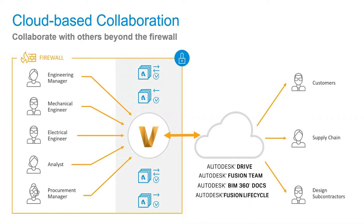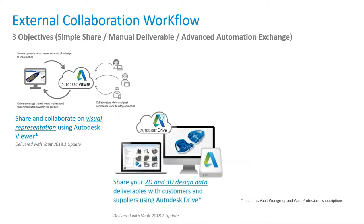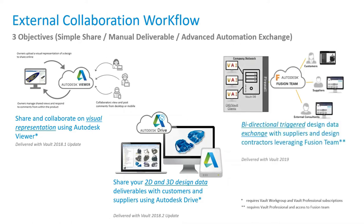Instead, you can use a secure cloud-based app called Fusion Team with Vault to share design files. External collaborators — customers, suppliers, and subcontractors that you authorize — can access your shared data and collaborate with you. Vault keeps them up to date with the latest versions of your files. You can get feedback using the Autodesk Viewer, deliver files using Autodesk Drive, and collaborate automatically using Fusion Team.